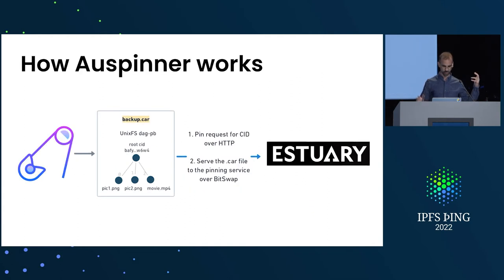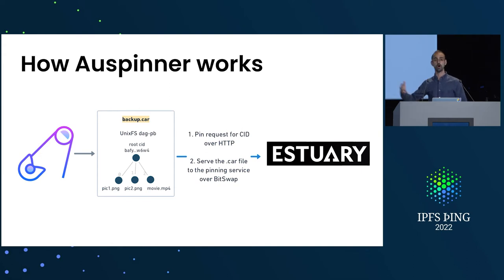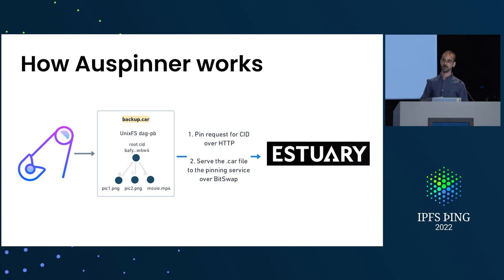So how does Ospinner work and what does it actually do? Essentially, it allows you to take a CAR file and pin it onto a pinning service. It takes the CAR file as input, makes an HTTP request, and hopefully the pinning service gives back some delegates to connect to. Then it starts a libP2P host, connects to those delegates, and makes the blocks available over BitSwap.